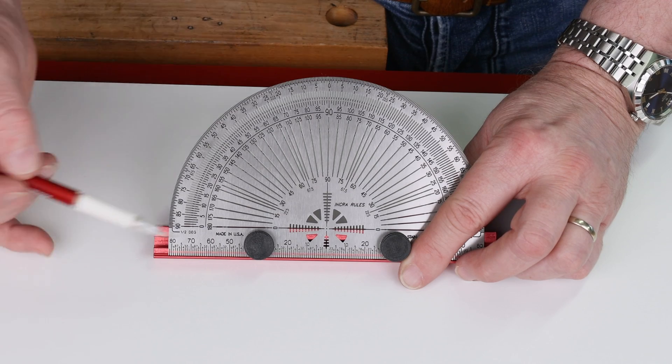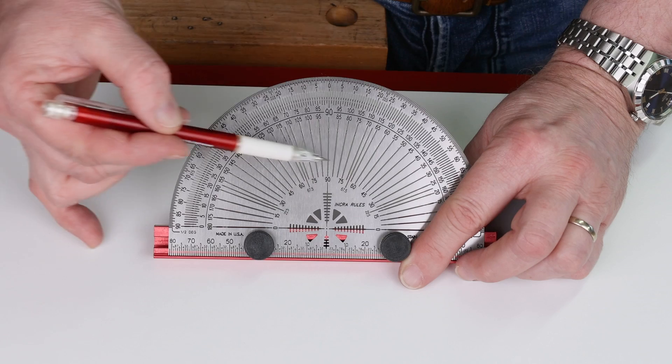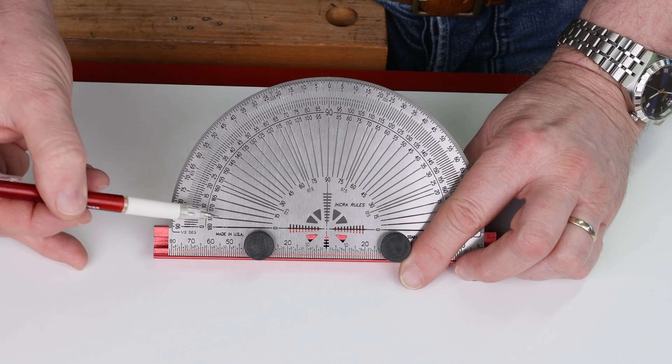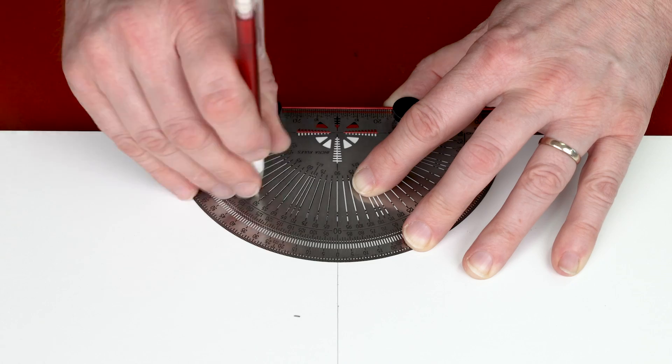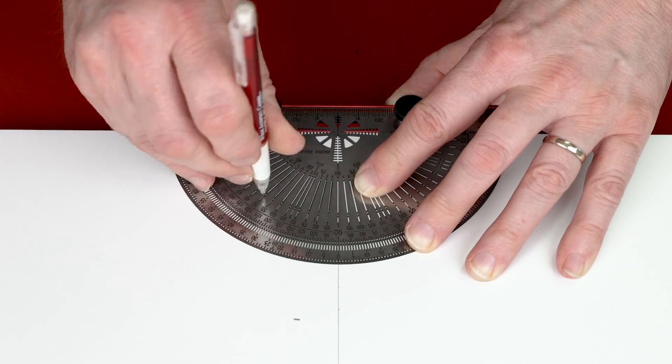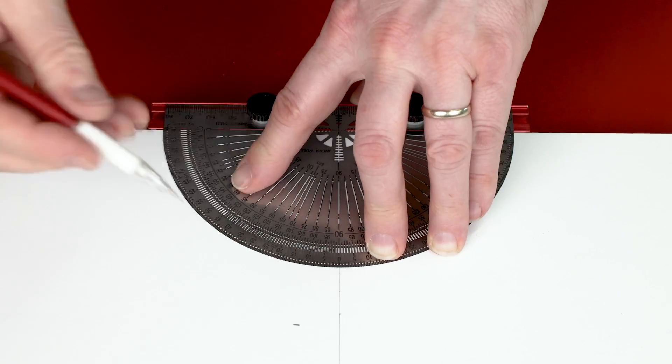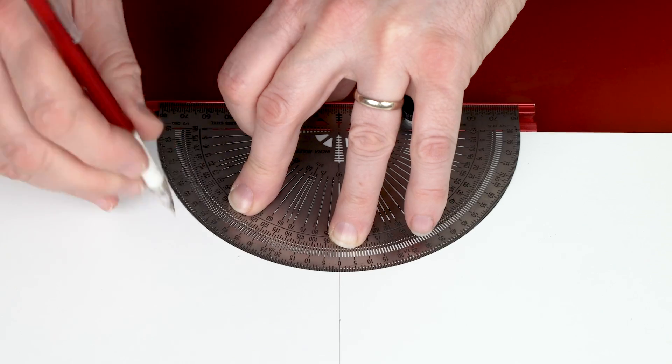The Inkra Precision Protractor is made of stainless steel with a non-glare finish and has pre-laser cut lines every 5 degree increments, every 1 degree increment, or the outer edge every half degree.